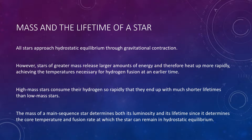So what happens to a star like the Sun after the core hydrogen has been used up, so that it is no longer a main sequence star? As we will see, it expands dramatically to become a red giant. To understand why this happens, it is useful to first look at how a star evolves during its main sequence lifetime. The nature of that evolution depends on whether its mass is less than or greater than about 0.4 solar masses.